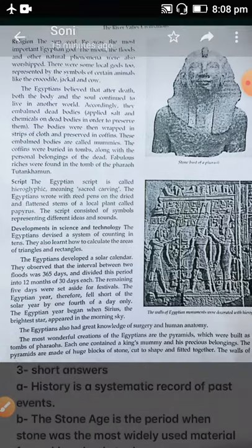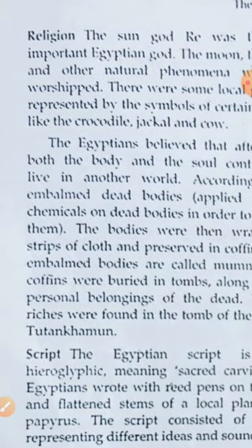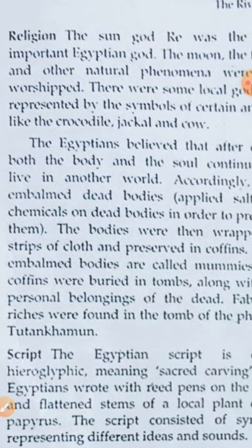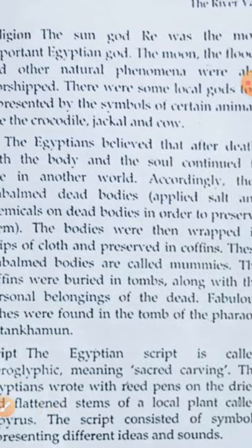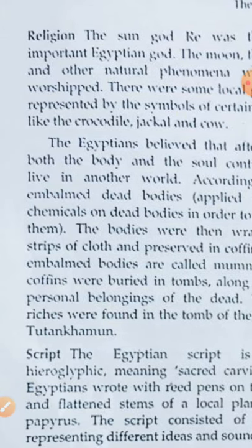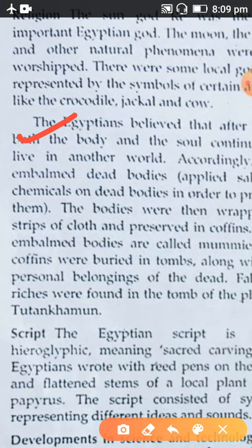Now, the religion of Egyptian people. The sun god Re was the most important Egyptian god. The moon, floods, and other natural phenomena were also worshipped — so they were nature worshippers. They believed that after death, both the body and the soul continued to live in another world.